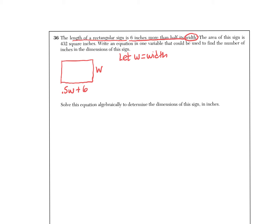I'm thinking ahead to the fact that maybe I'll want to be multiplying, so I'll leave this as 0.5. It says the area of the sign is 432 square inches, so it's important to remember area is equal to length times width.